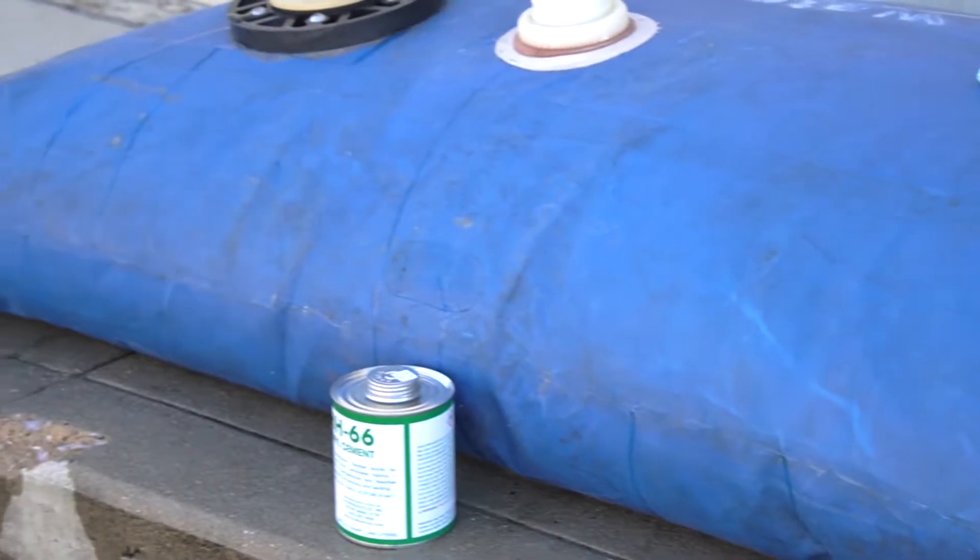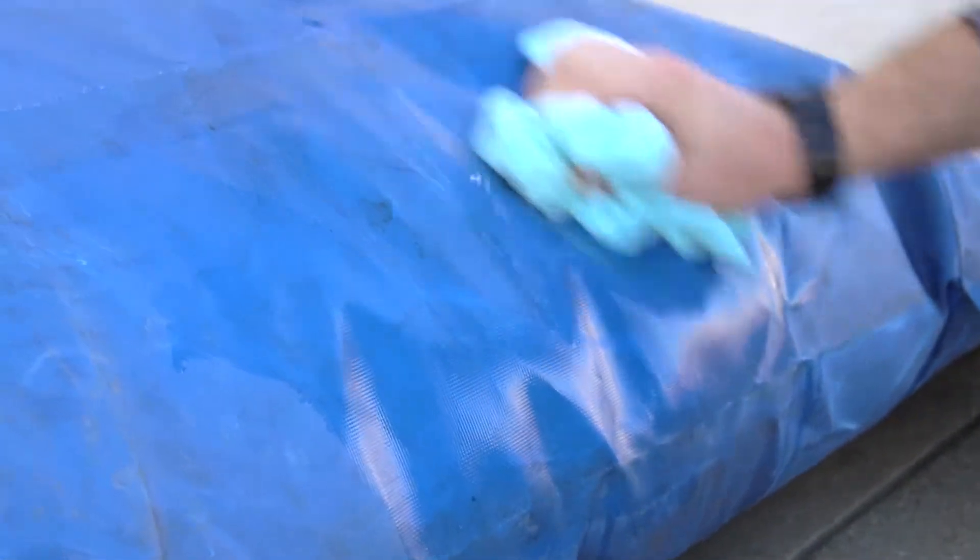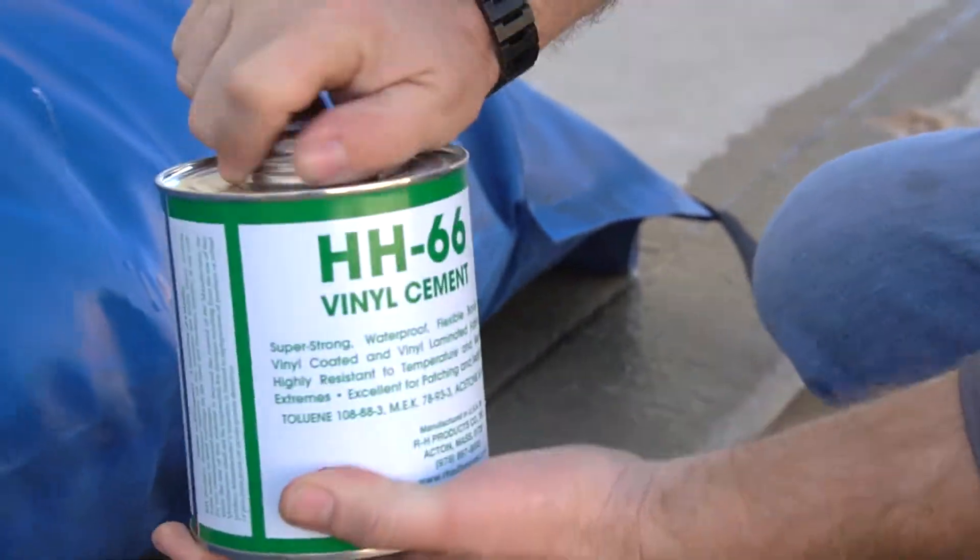Now that you have your tools on hand, let's take a look at this small leak in our Aquabarrier for us to practice on. First, take a rag or paper towel and scrub the area clean of dirt and debris. This will ensure much better results in the adhesion process.